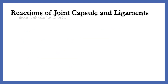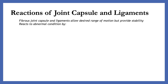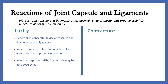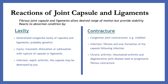Reaction of joint capsule and ligaments. Fibrous joint capsule and ligaments allow desired range of motion but provide stability. They react to abnormal conditions by laxity and contracture. For laxity, there are three types: generalized congenital laxity of capsule and ligaments, which is probably genetic; traumatic dislocation or subluxation with rupture of capsule or ligaments; and in septic arthritis, the capsule may be destroyed by pus. For contractures, there are congenital joint contractures such as club feet, fibrosis and scar formation following infection, chronic arthritis including rheumatoid arthritis and degenerative joint disease leading to progressive fibrous contractures, and muscle contractures involving muscle imbalance or prolonged muscle spasm.